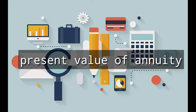Present value refers to the current worth of future cash flows. Annuity refers to a uniform stream of cash flows to be received per period for a specific number of periods.